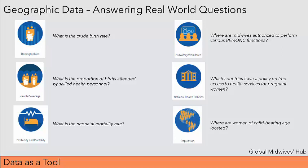Visualizing geographic data can demonstrate where communities are being underserved. If we consider different categories of data, such as the midwifery workforce, for example, we can ask questions that help us to identify opportunities for improvement. The questions on this slide can be answered using geographic data at various scales, such as regional, country, and even at the sub-national level.